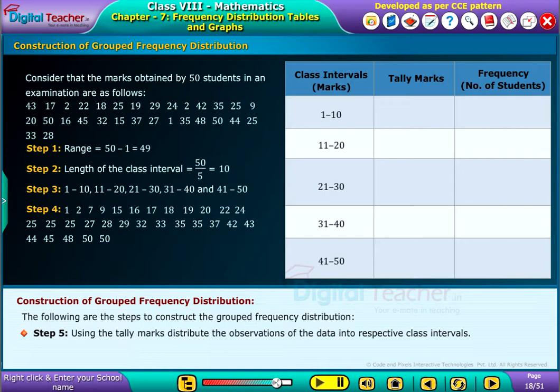Step 5: Using the tally marks, distribute the observations of the data into respective class intervals.